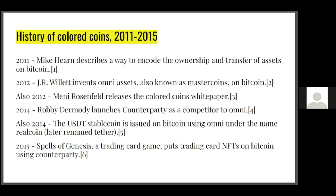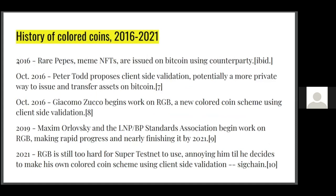Also in 2014, Tether launched their stablecoin on Bitcoin under the name 'Real Coin,' later renamed Tether. In 2015, trading card company Spells of Genesis issued what appear to be the first NFTs on Bitcoin, using Counterparty. Both Counterparty and Omni still exist today: Counterparty is more frequently used for NFTs, and Omni is more frequently used for stablecoins, though either protocol can technically do both.